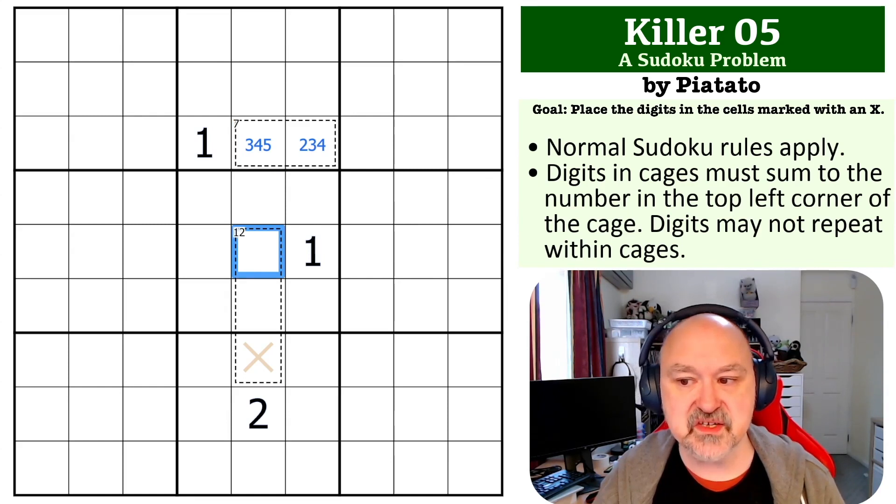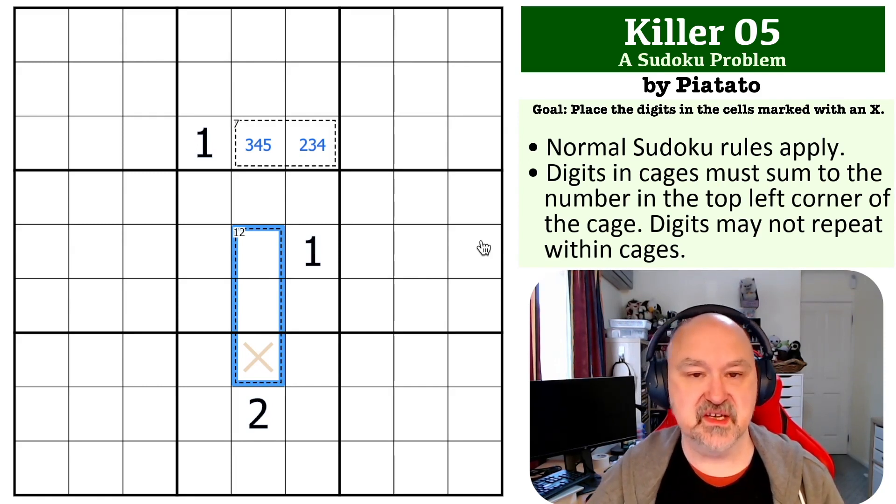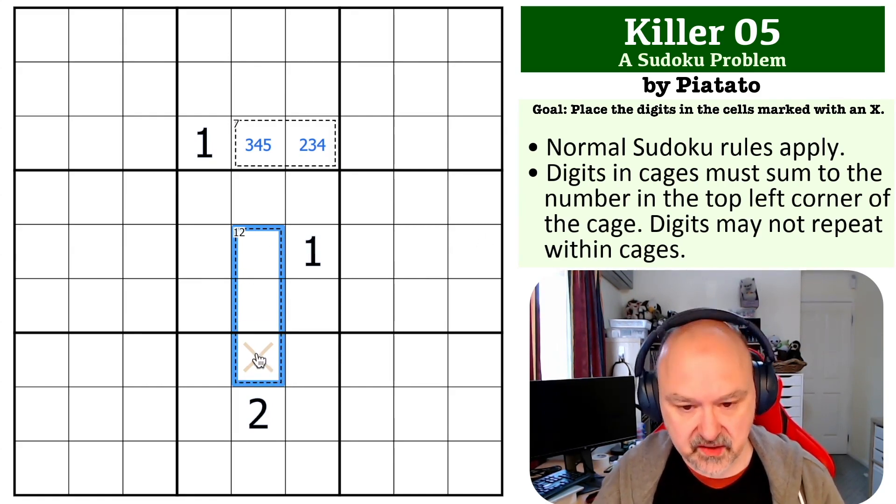But now you've got this 12 cage down here that we need to try and figure out something about. Now, in this 12 cage, we can't use a 2, because this 2 sees the whole 12 cage. So that means the options 2, 3, 7, and 2, 4, 6 just don't work, as well as 1, 2, 9.